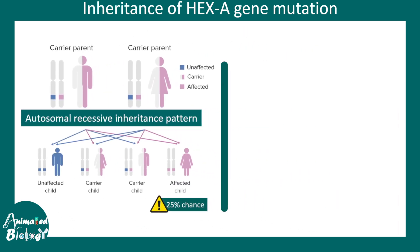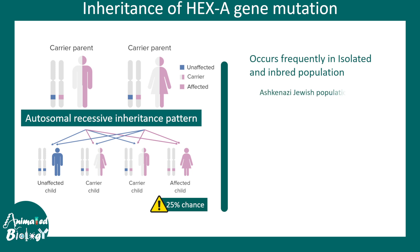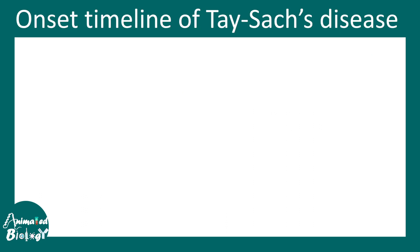Inbreeding can lead to and increase the chance of this kind of disease. Inbred populations like Ashkenazi Jews, French Canadians, and the Amish population are more vulnerable to Tay-Sachs disease and are at higher risk of developing genetic disorders like this.